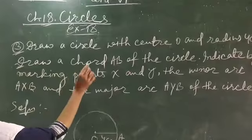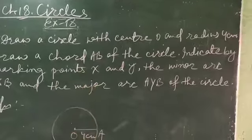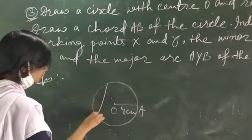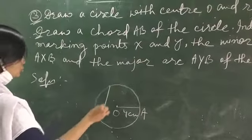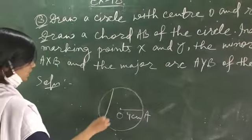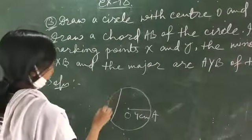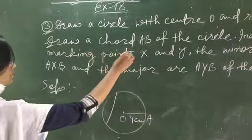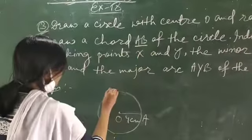Now draw a chord AB of the circle. You know, any line segment which touches the circle at 2 points at 2 ends is known as a chord of this circle. So this one is the chord of the circle. The name of this chord is AB.